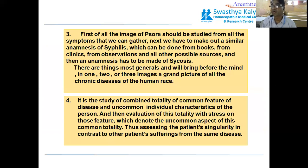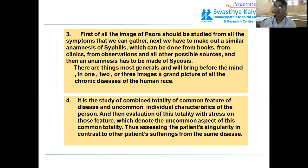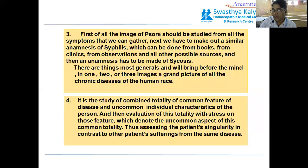The image of Psora should be steady from all symptoms gathered. Next, make out a similar anamnesis of Syphilis, which can be done from books, clinical observation, and all possible sources. Then anamnesis has to be made of Psychosis. There are images — most general — that will bring before the mind one, two, or three images: the grand picture of all chronic diseases of human races. It is a study of the combined totality of common features of disease and uncommon individual characteristics of this person, then evaluation of the totality with stress on those features which denote the uncommon aspect of his common totality, assigning the patient's singularity in contrast to other patients suffering from the same disease.